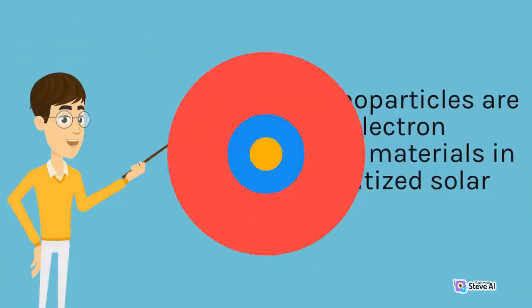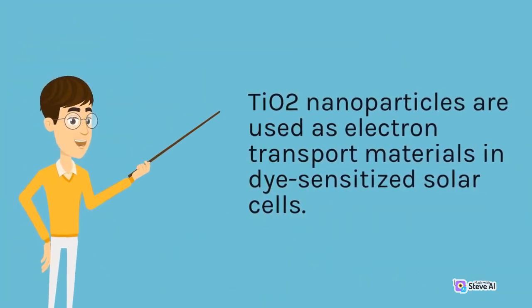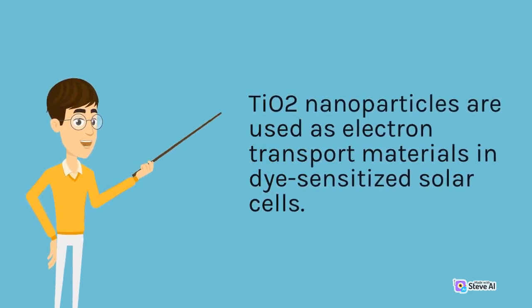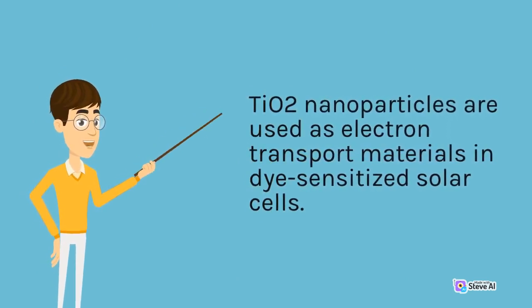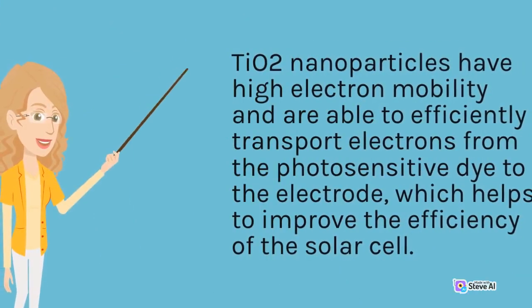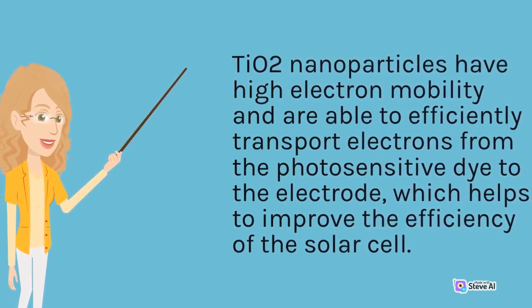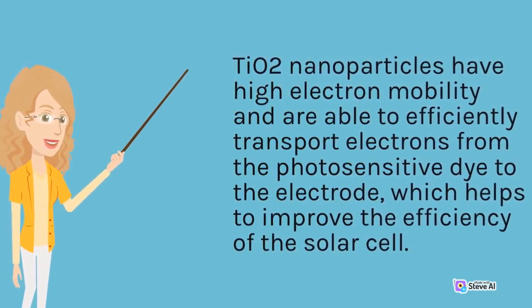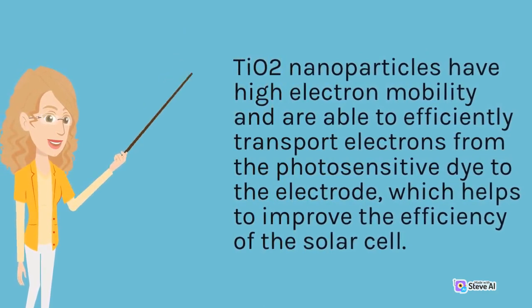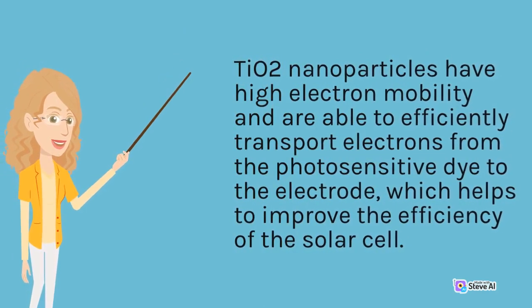TiO2 nanoparticles are used as electron transport materials in dye-sensitized solar cells. They have high electron mobility and are able to efficiently transport electrons from the photosensitive dye to the electrode, which helps to improve the efficiency of the solar cell.